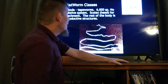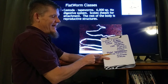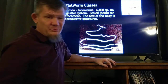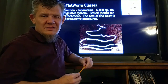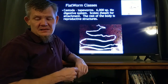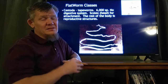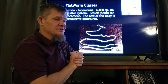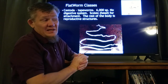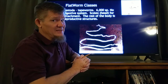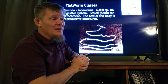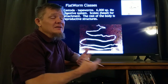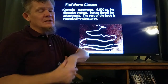Our last group of flatworms are the tapeworms — class Cestoda, the cestodes. Tapeworms are found in the digestive system, in the intestines. There are about 6,000 species of tapeworms, not nearly as many as there are flukes. They don't have a digestive system, which is kind of interesting — why not? Well, where do you find them? You find them in the digestive system. They literally live within a soup of digested food, so they don't need a digestive system. What they do is literally absorb the nutrients you would be taking in.